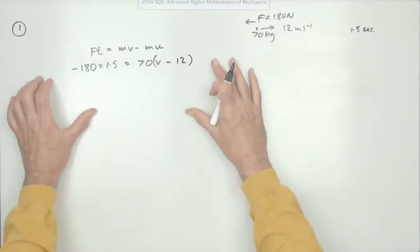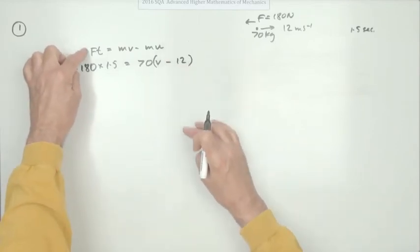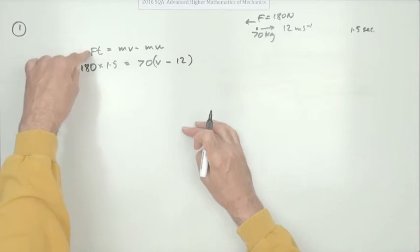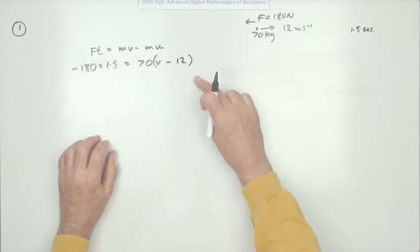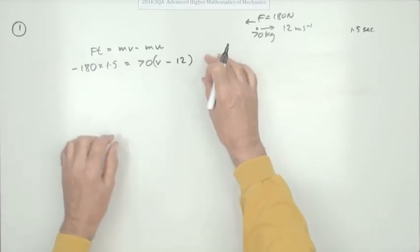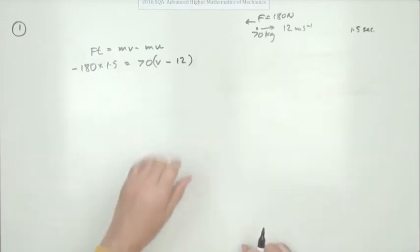Now in the marking scheme instead of doing this there's one mark for working out the impulse which would involve the units newton seconds, but in writing this equation as it stands just now is unitless because both sides have the same units.